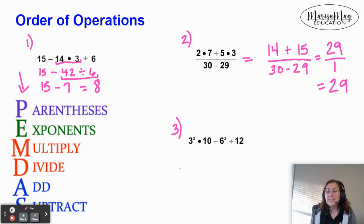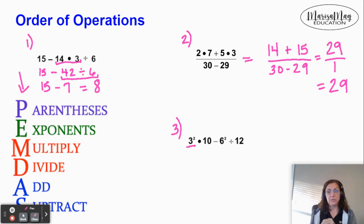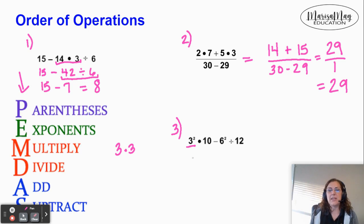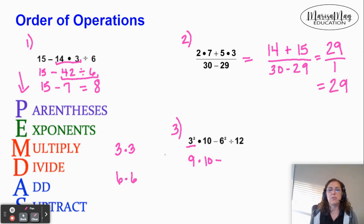Our third example with the order of operations brings in exponents. We don't have any parentheses, so we'll do the exponents. 3 to the 2nd — I get a lot of students that think this means 3 times 2, but it actually doesn't. 3 to the 2nd says to write the 3 two times and multiply. So instead of 3 times 2, we do 3 times 3, which is 9. I'm going to write the times 10 part because we haven't reached that step yet. Then 6 to the 2nd power — remember, that's not 6 times 2. That's write the 6 two times and multiply, giving me 36. So we finish the exponent step.